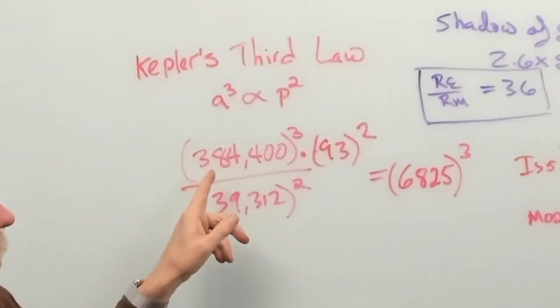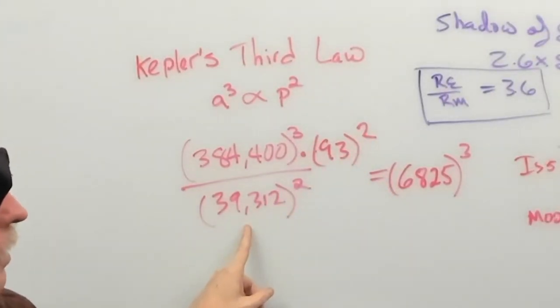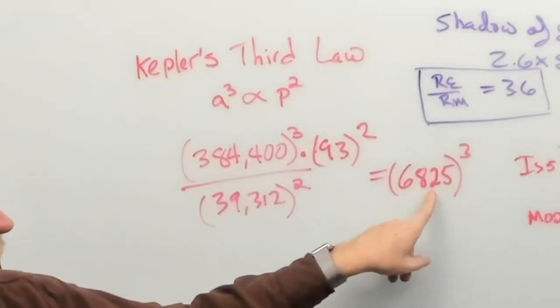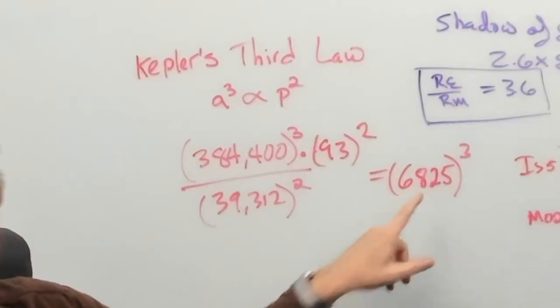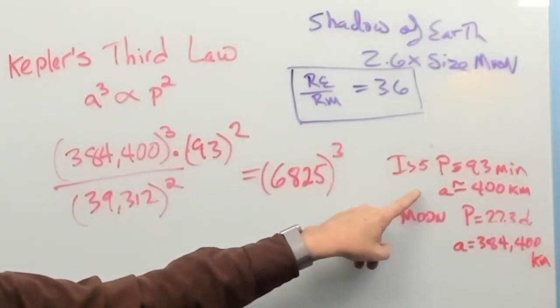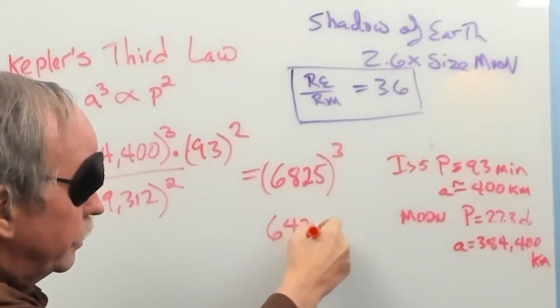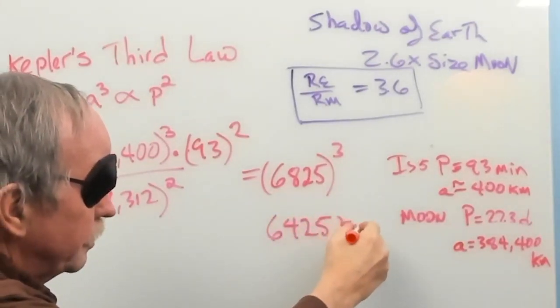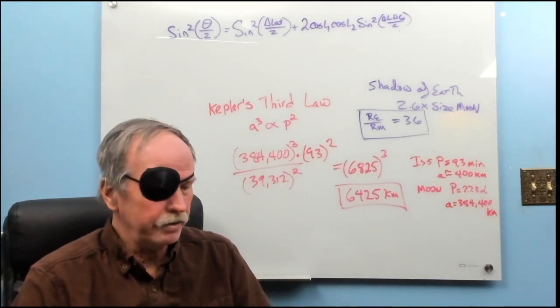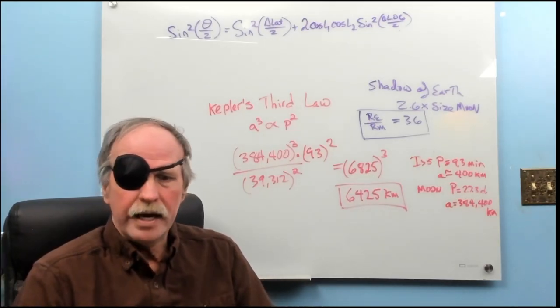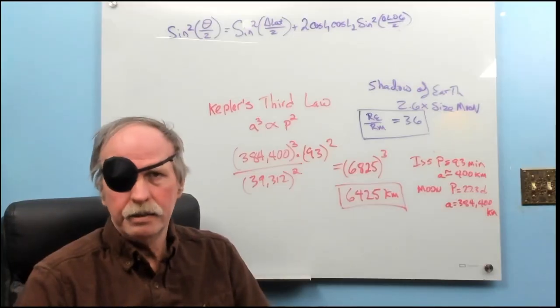And then we'll solve for that. Let's go ahead and do that real quick. So, here we go. 384,400 cubed, times 93 squared, divided by 39,312 squared, equals 6,825 cubed. And this will be in kilometers. The ISS orbits 400 kilometers above the surface of the earth. So, we have to subtract that 400, and we get 6,425 kilometers as the radius of the earth. And that comes up to a diameter of the earth of 12,850 kilometers. 12,756 kilometers is the official reading. We're less than 100 kilometers off.